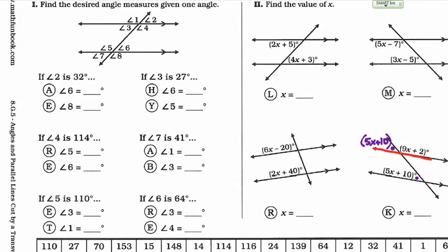And supplementary angles add up to equal 180 degrees. So that means I can add these two angles together and equal them to 180. So I'd write 5X plus 10 plus 9X plus 2, and I'm going to set that equal to 180. Because two angles right next to each other are supplementary, and when you add them together, it equals 180 because they're on the same line.